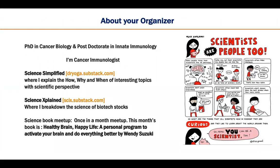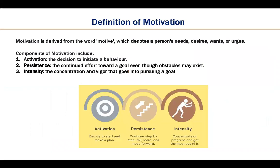Now let's get to motivation. What is the definition of motivation? Motivation comes from the word 'motive,' which denotes a person's needs, desires, wants, or urges. It has three components: activation, persistence, and intensity. The degree to which these components are present can impact whether you achieve your goal. Strong activation means you are more likely to start pursuing a goal; persistence and intensity will determine if you keep working towards it and how much effort you devote.